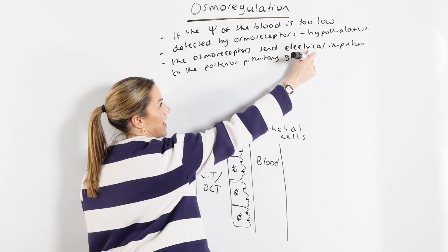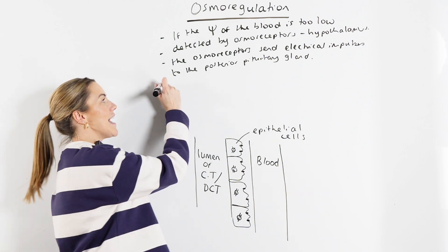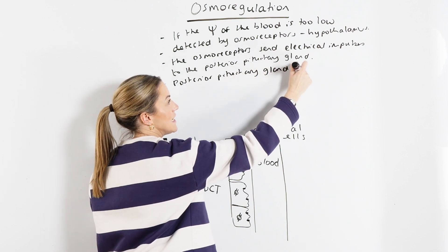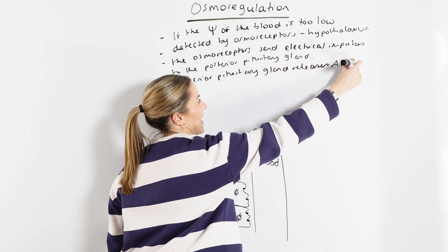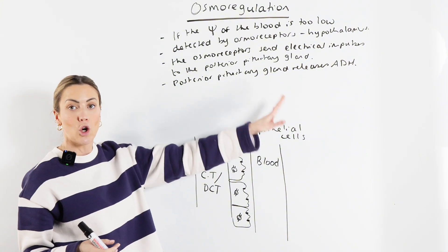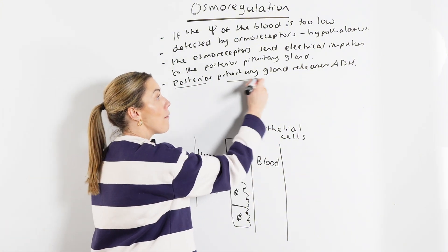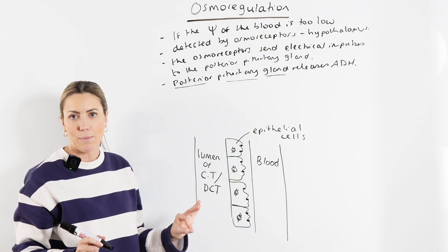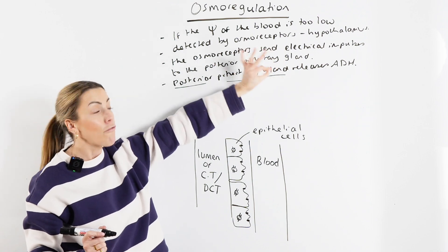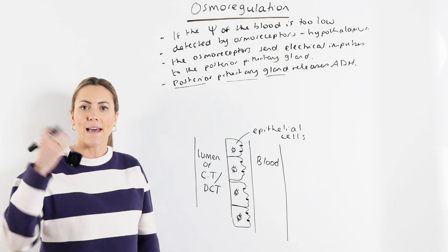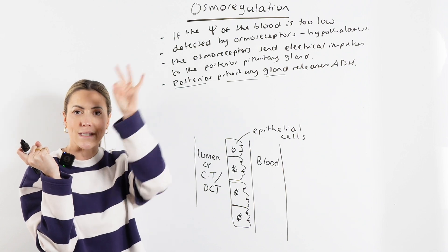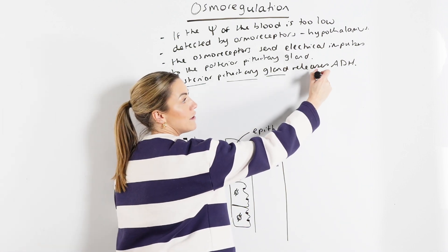You do need to say posterior pituitary gland. Then the posterior pituitary gland releases ADH, which is an abbreviation you're allowed to use — it stands for anti-diuretic hormone. The anti-diuretic hormone is released from the posterior pituitary gland, and what stimulates the posterior pituitary gland to release that ADH is the electrical impulse it receives from the osmoreceptors themselves, which are in the hypothalamus. The hypothalamus is right next to the pituitary gland, so the osmoreceptors detect that fall in water potential and send electrical impulses to the posterior pituitary gland, making it release ADH.